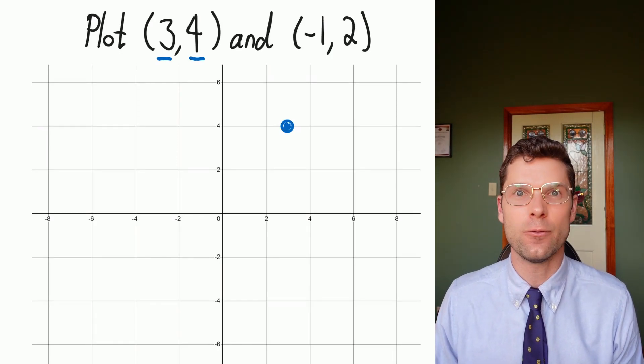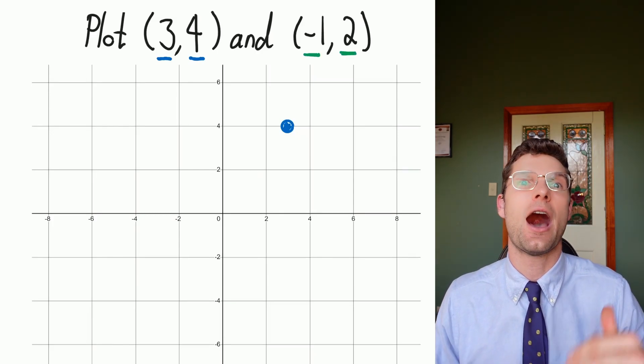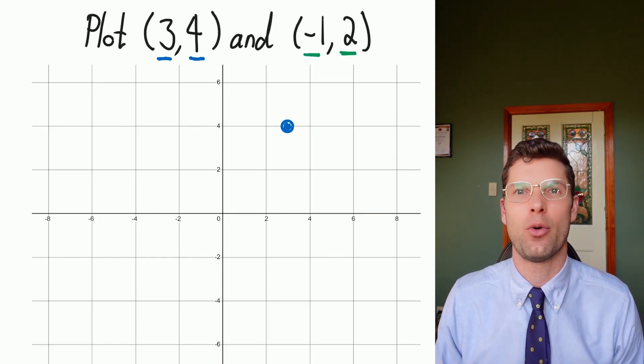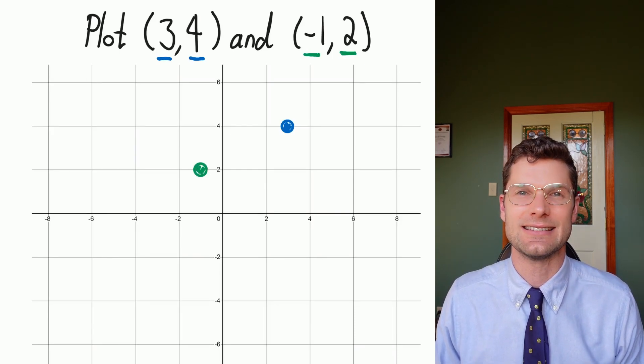Then for our (-1, 2), negative one means go to the left one position, and then up two positions. That's where our point is. That's really the only skill that we need in order to excel in today's lesson.